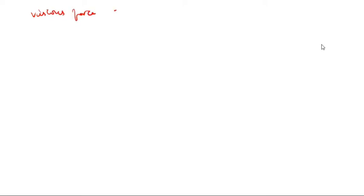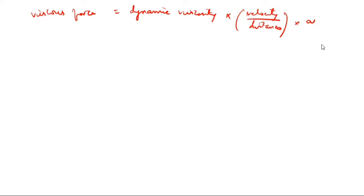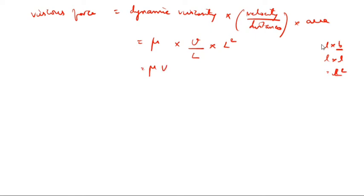Next, viscous force. Viscous force equals dynamic viscosity into velocity by distance into area. Dynamic viscosity is mu. So, mu into V divided by L into area L squared, giving mu V by L into L squared. One L cancels, so viscous force equals mu V L.